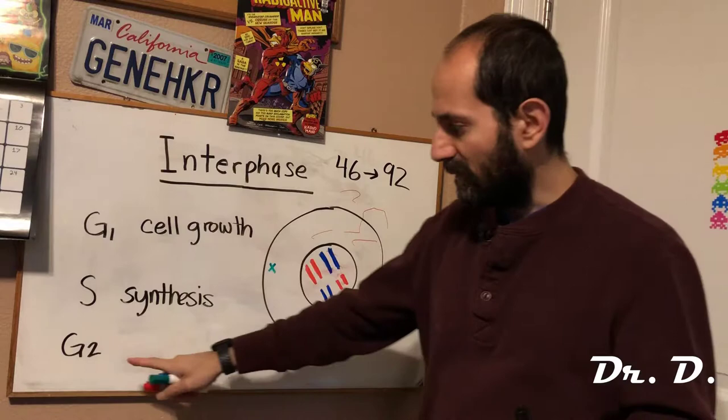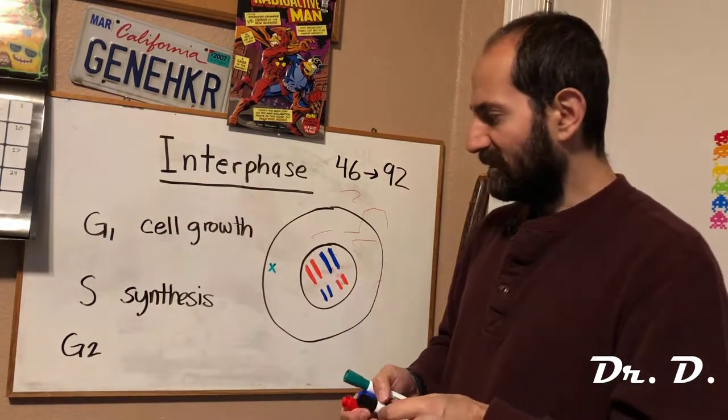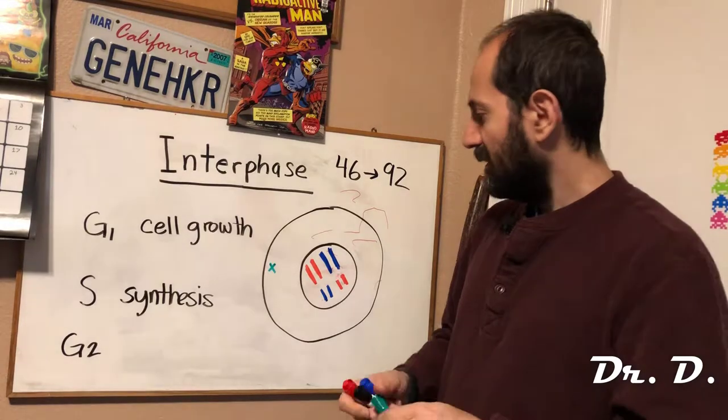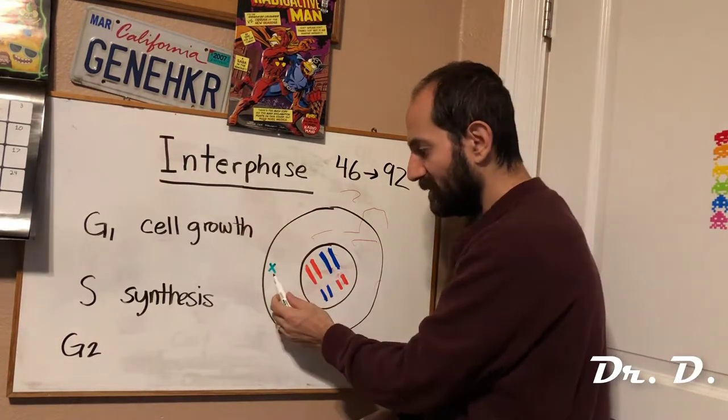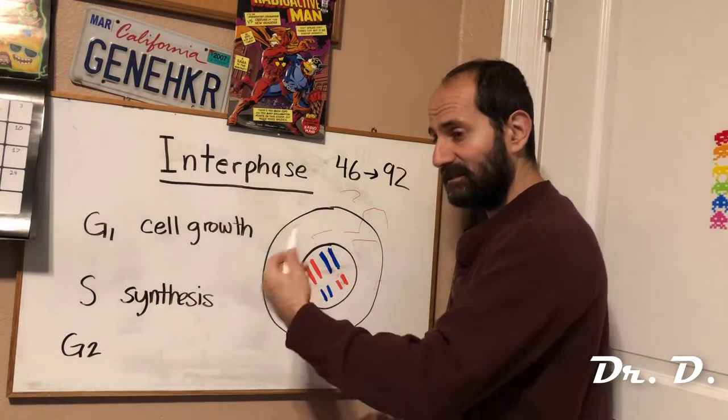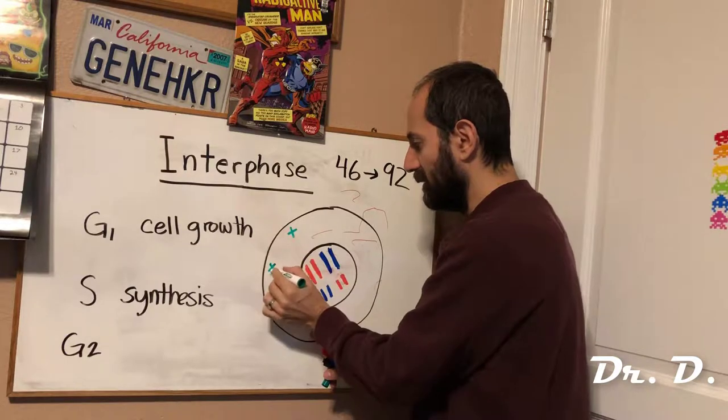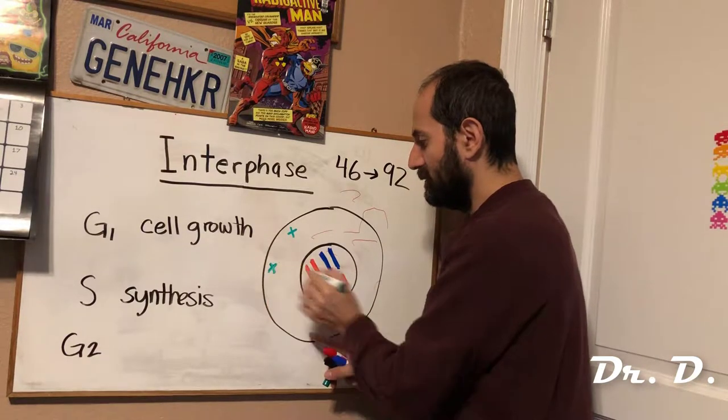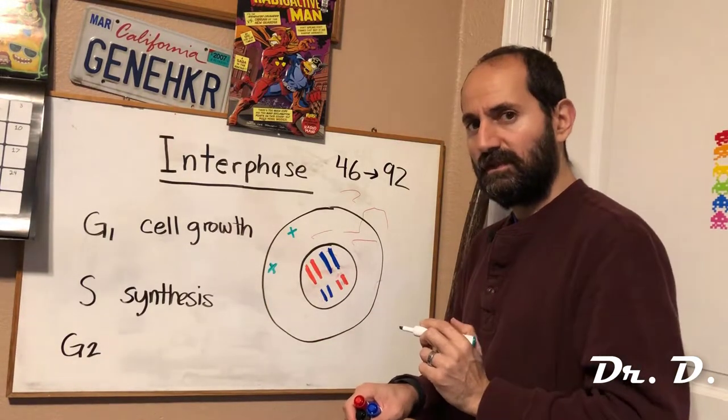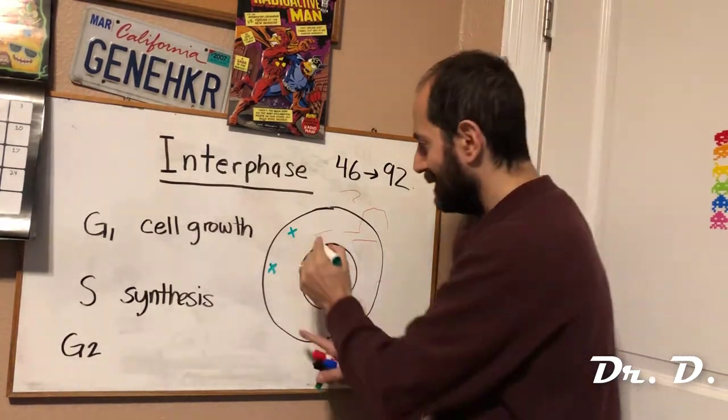But you're not done with interphase yet. There's still one more part to interphase. It's called G2, or growth phase two. And the main thing that happens here is, you remember, each animal cell has a centriole pair that gets replicated. So you actually end up with two centriole pairs. And remember the centrioles are made of microtubules.